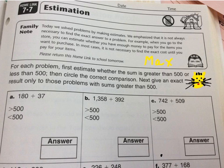So let's look at the directions first, because this is a little bit different. For each problem, first estimate whether the sum is greater than 500 or less than 500.